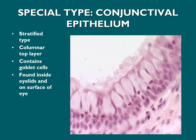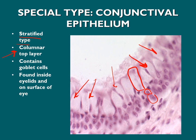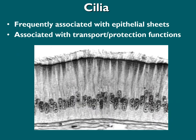The third special type is conjunctival epithelium, found in the conjunctiva. It is a stratified type epithelium, columnar in the top layer. We can see several layers, with the top layer being columnar epithelium containing many goblet cells — found inside our eyelid and on the surface of the eye.